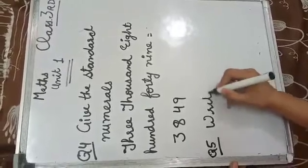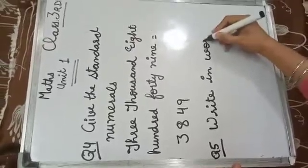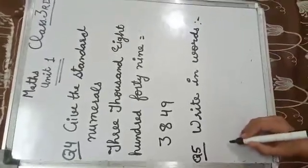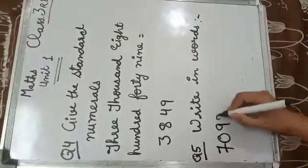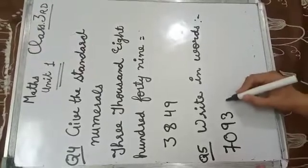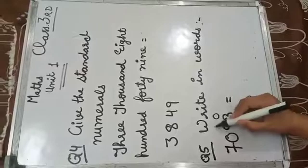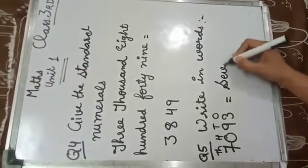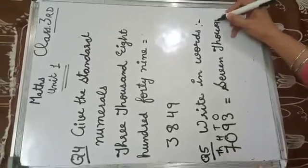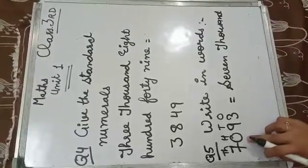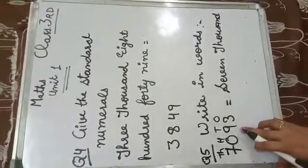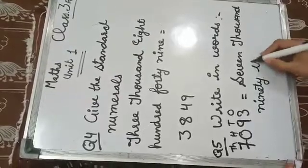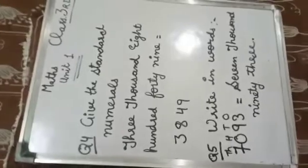Now write the digits in words. Start from ones, tens, hundreds, and thousands. For example: seven thousand — zero is on the hundreds place — tens place seven, so we write seven thousand ninety-three. Is it clear to everyone?